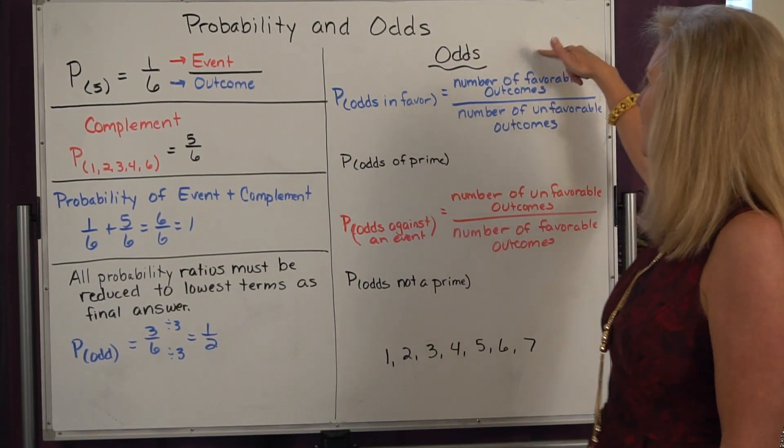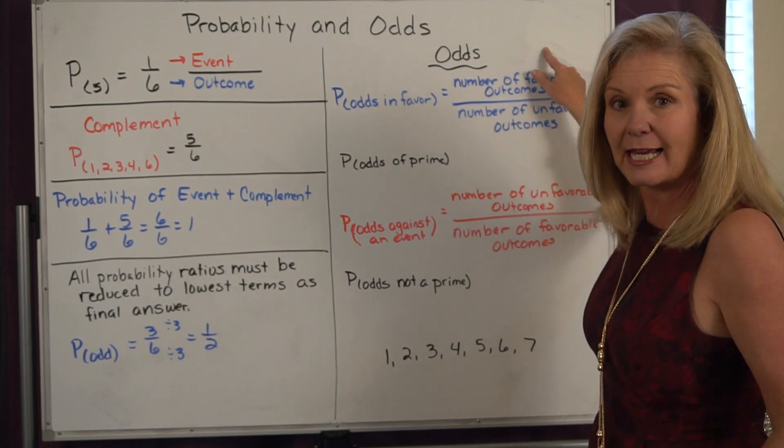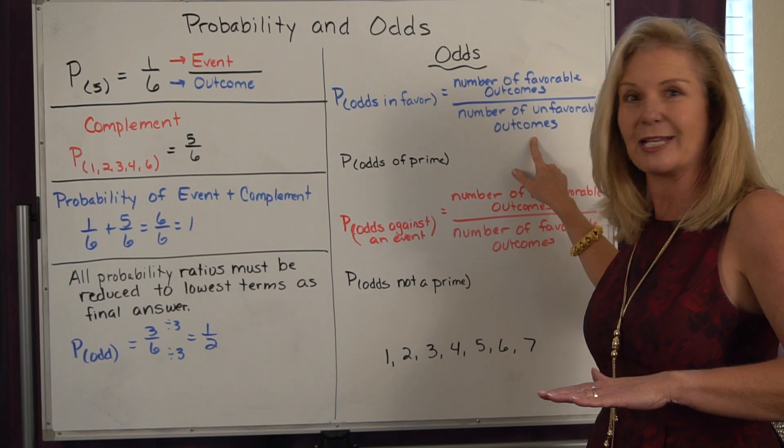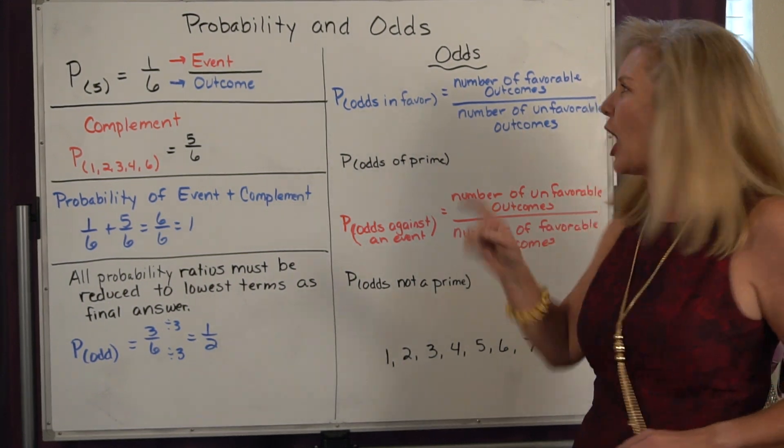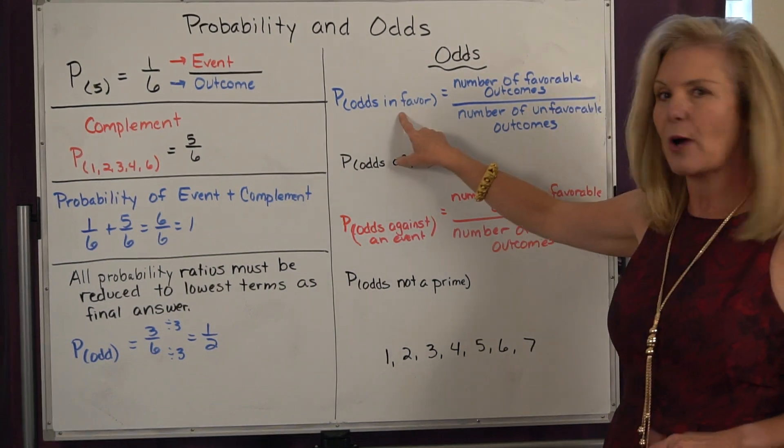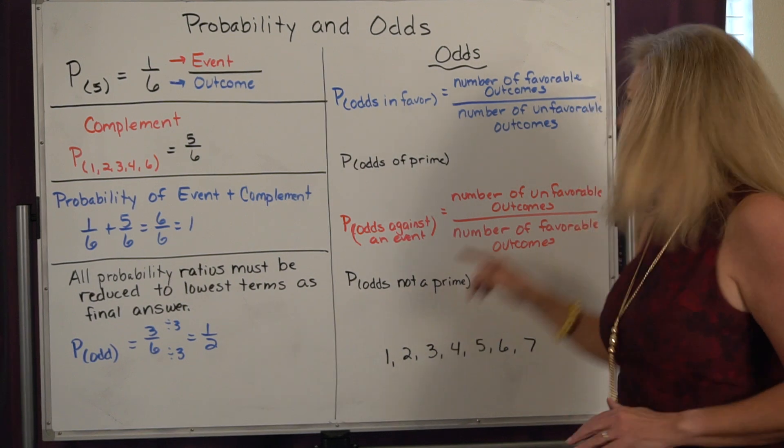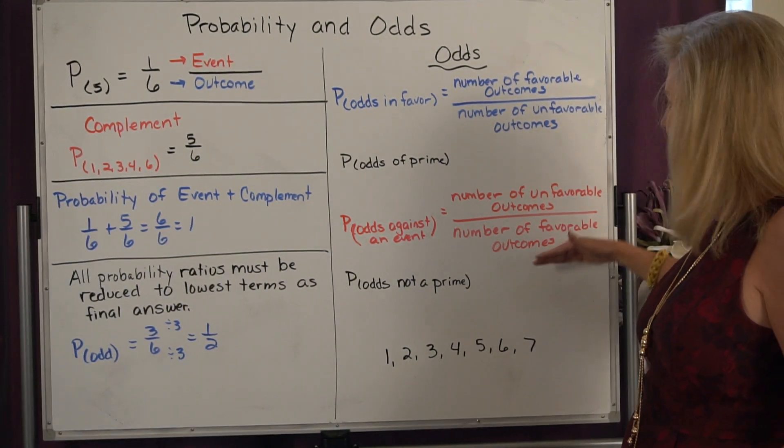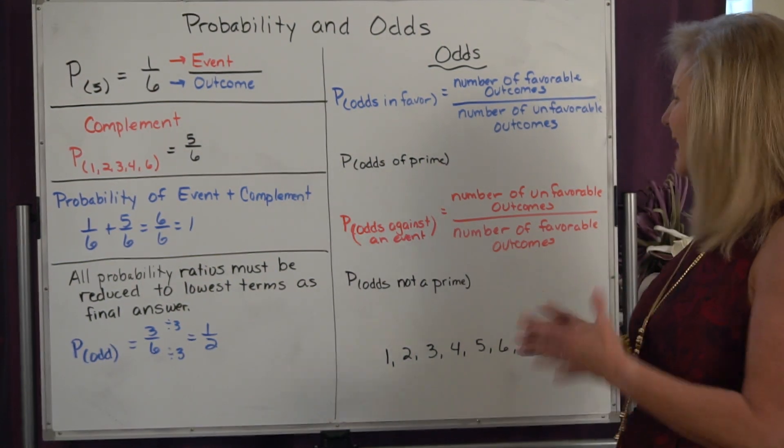So when we take a look at odds in favor of something happening, really what we're looking at is how many ways in favor that it could happen versus the other side is how many ways will it not happen, or unfavorable. So we're always looking at opposites when we're looking at odds. And you can do opposites in favor or you can do opposites against. And if it was against, it's the number of unfavorable outcomes on top versus the number of favorable outcomes on bottom.